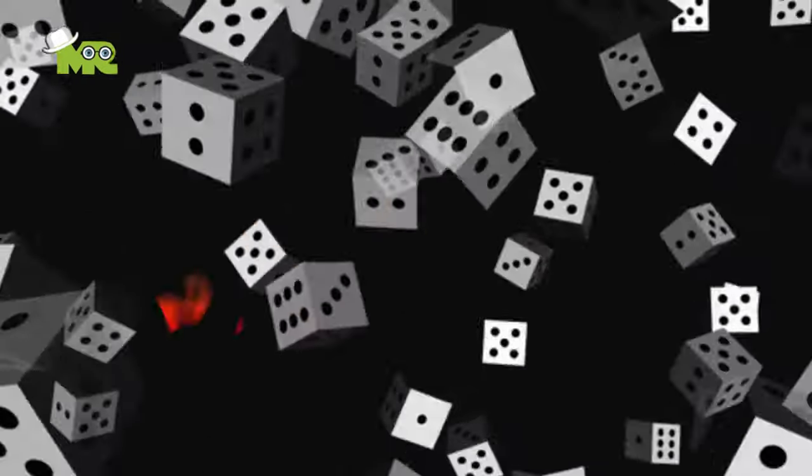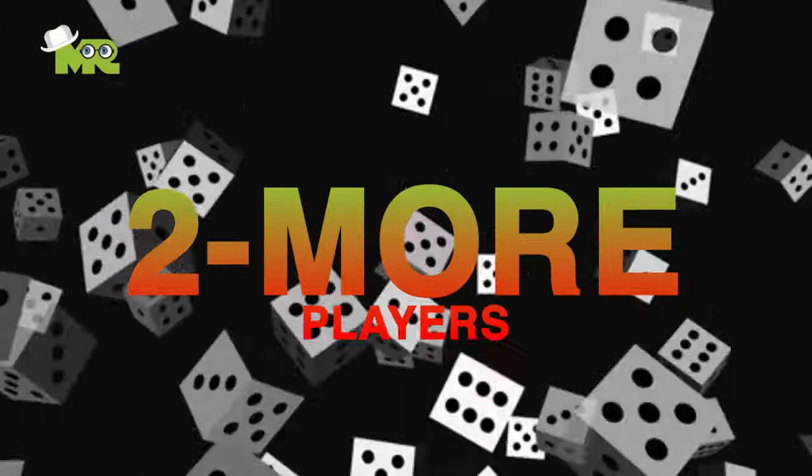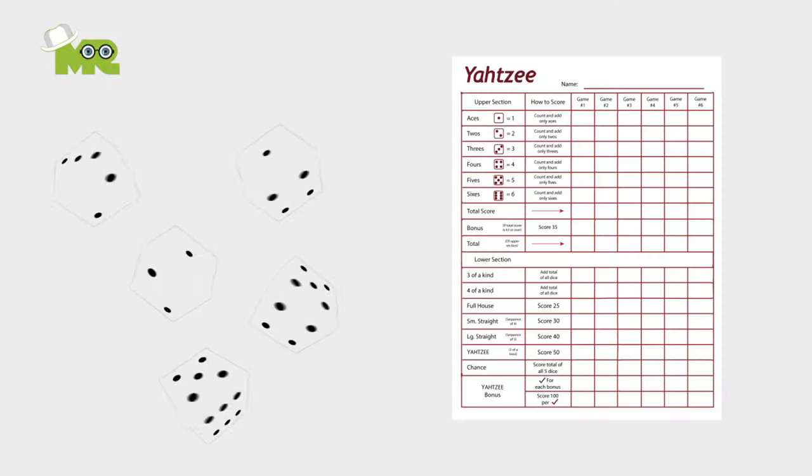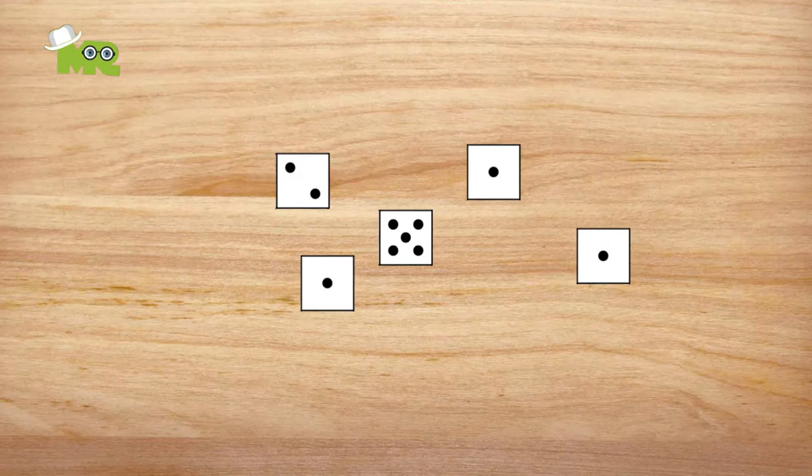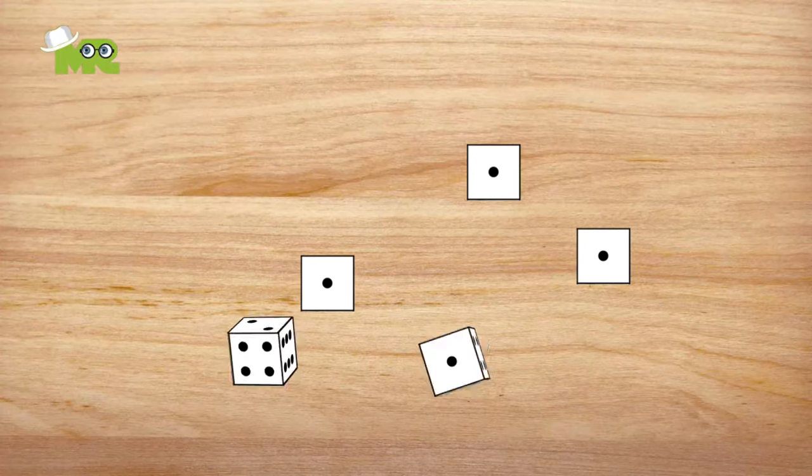The dice game Yahtzee is played between two or more players. Five dice and a scorepad are required to play the game. The objective of Yahtzee is for each player to score the most points by rolling different combinations with five dice.